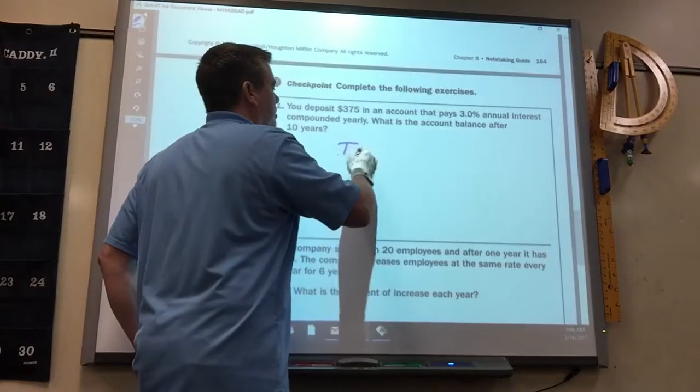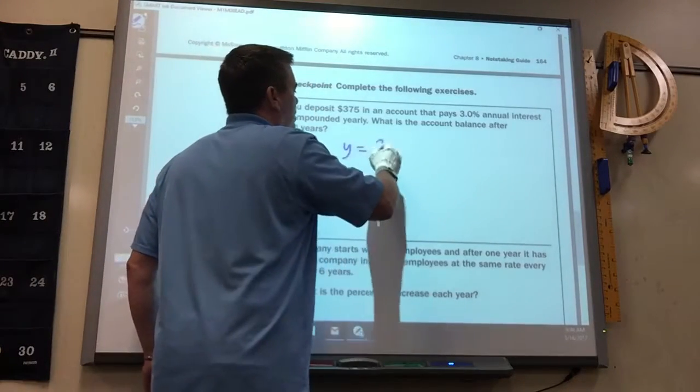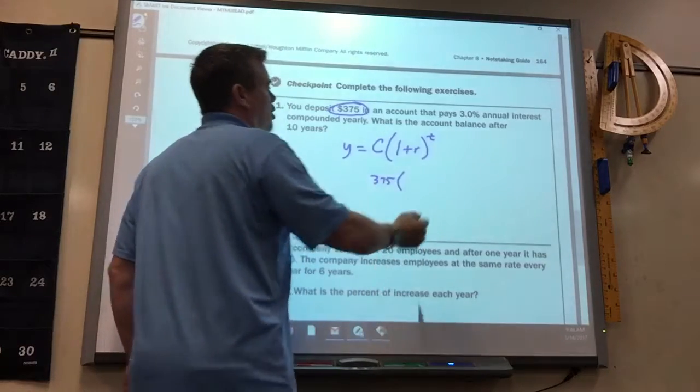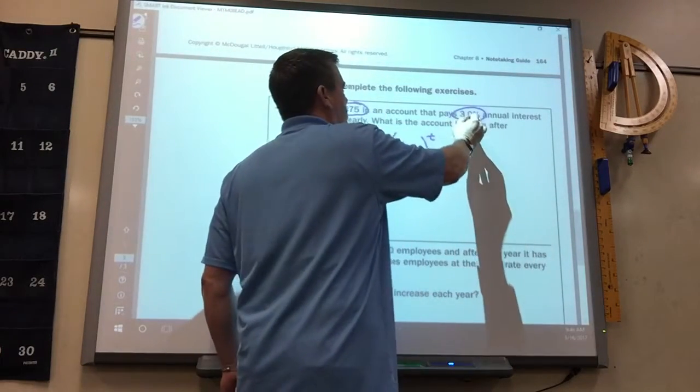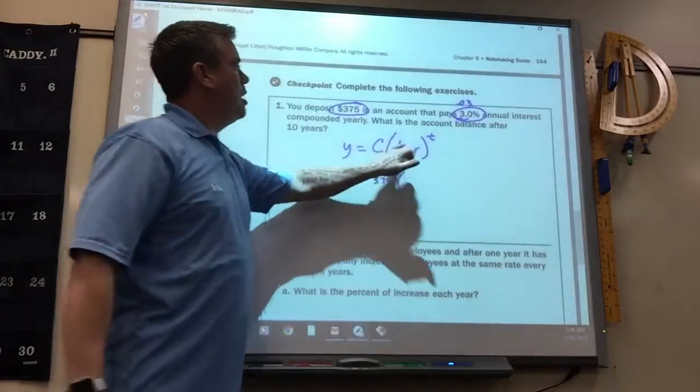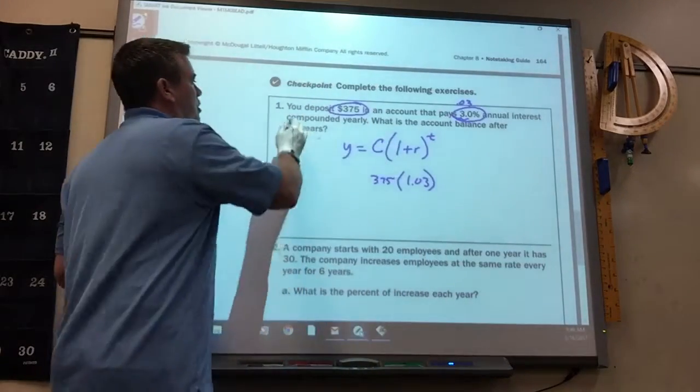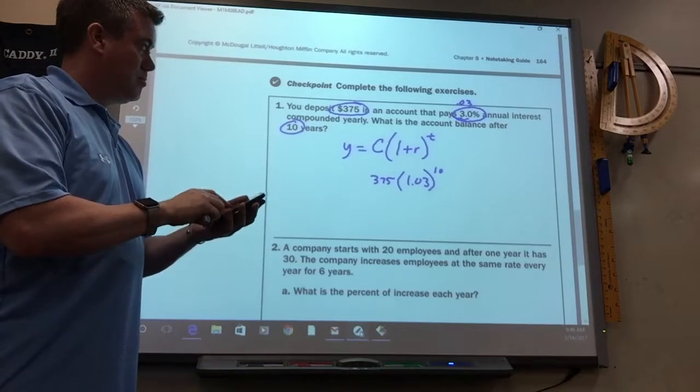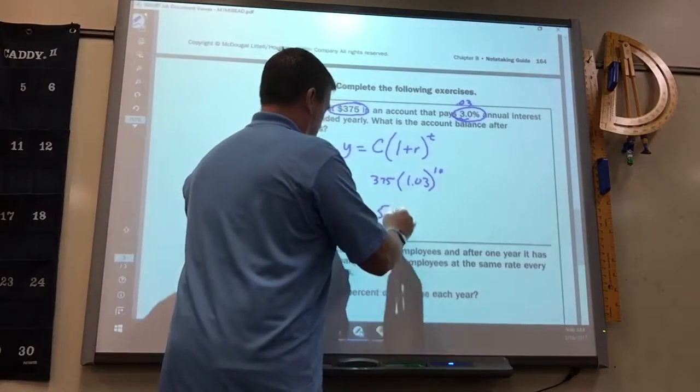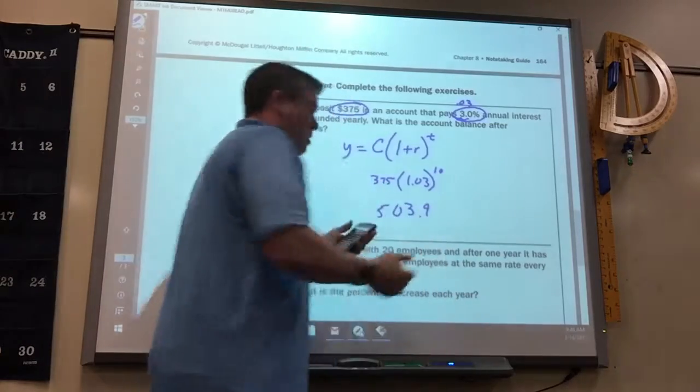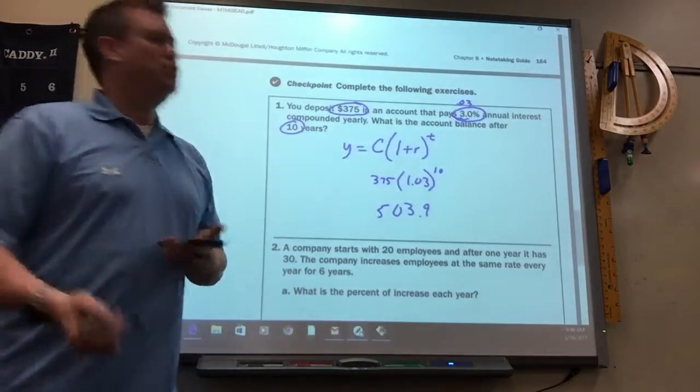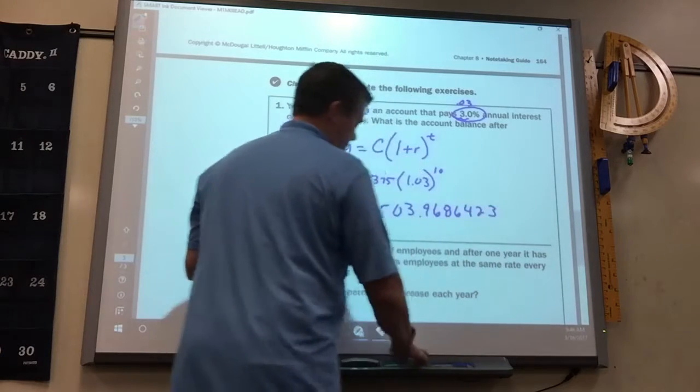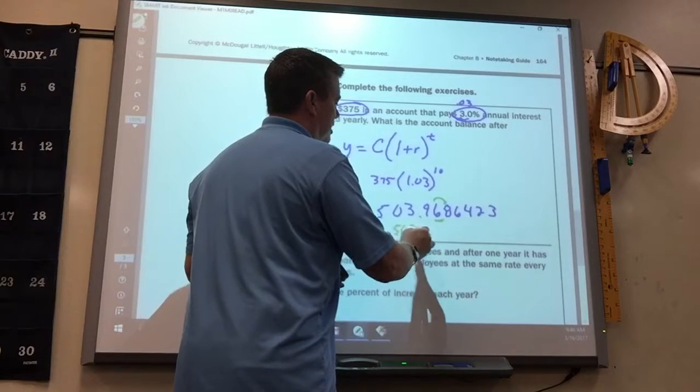It's Y equals the original amount, times 1 plus the rate, raised to the T. So, here's the original amount. The rate is 3%. And again, this is where most people get it wrong. 3% is .03. 1.03. Raised to the number of years. $503. Now, in money, how many decimal places are there? Two. So, this gets to be 9, 6, 8, 6, 4, 2, 3. So, this would round up to 7, right? It'd be $503.97.